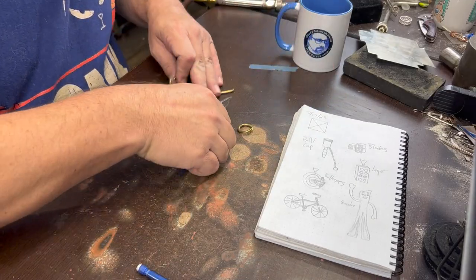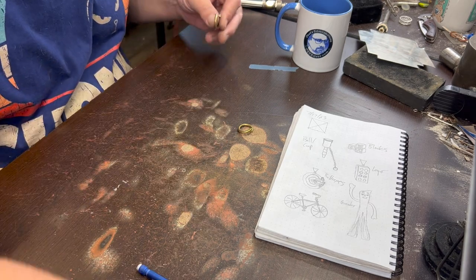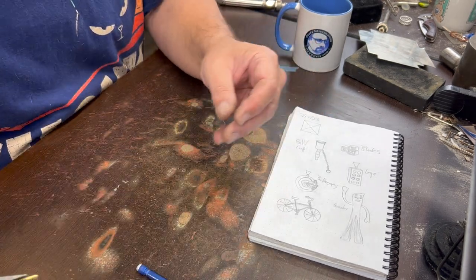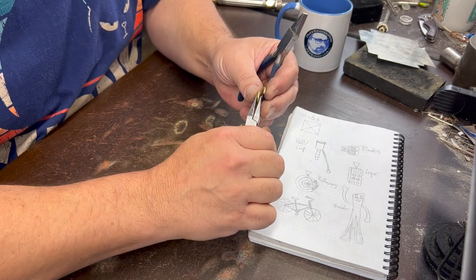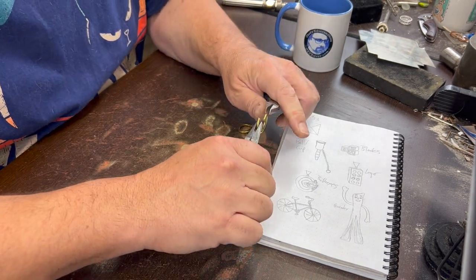I want to make these into perfect circles or at least as close as I can get them. This stuff is pretty hard to bend, so I'm going to use two pairs of these flat nose pliers so I can get a grip on it.